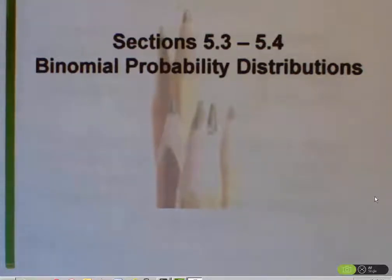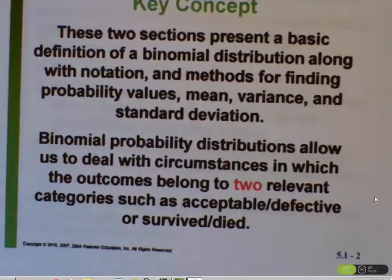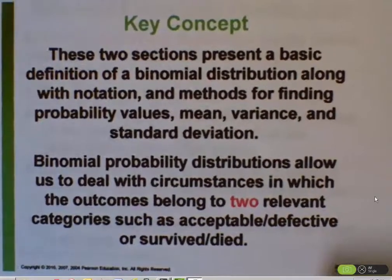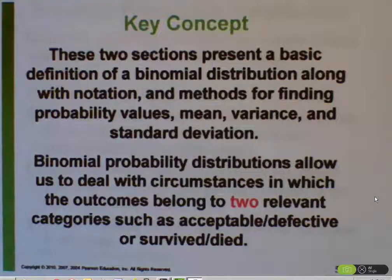In sections 5.3 and 5.4, we talk about a specific type of probability distribution known as a binomial probability distribution. We'll talk about the definition of a binomial probability distribution and how to find the mean, the variance, and the standard deviation of a binomial probability distribution.